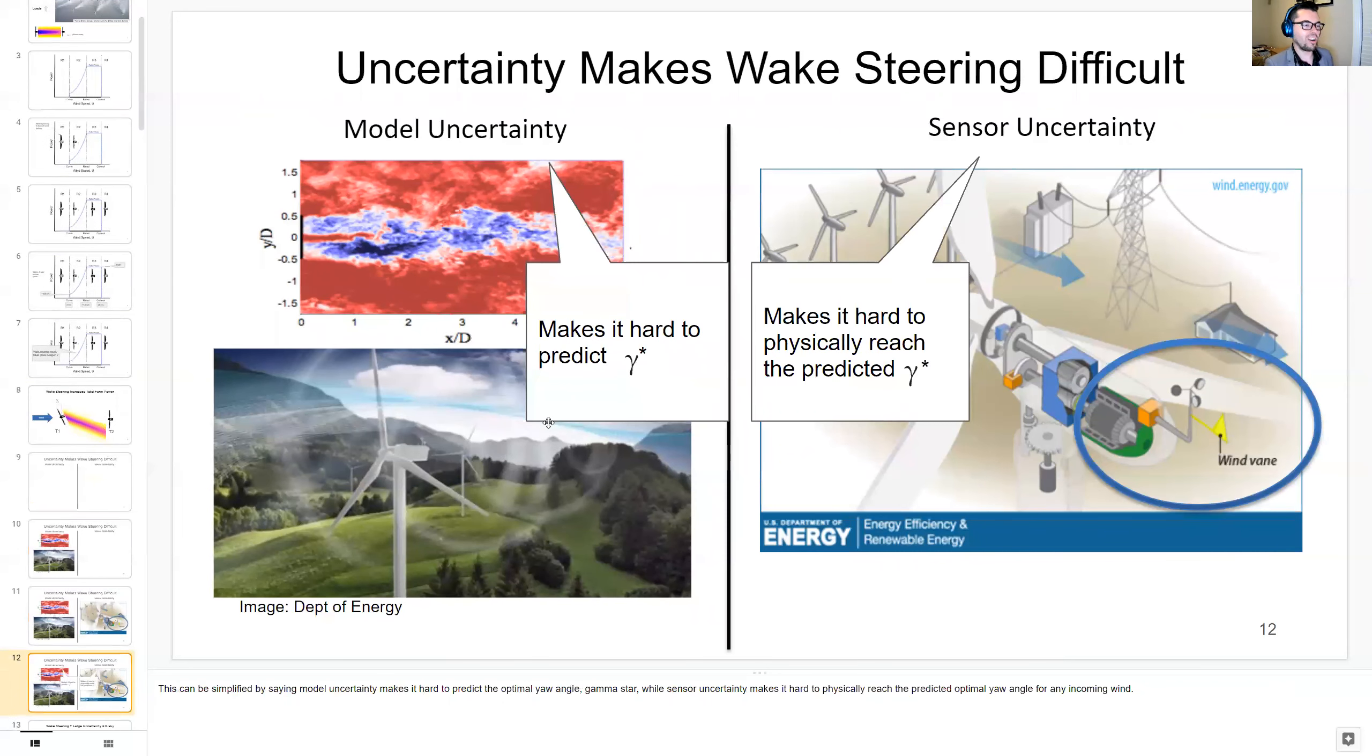This can be summarized in that model uncertainty makes it hard to predict what the absolute optimal yaw angle is, gamma star, and then sensor uncertainty makes it hard to physically reach the predicted yaw angle since you don't know exactly what direction the wind is coming from.